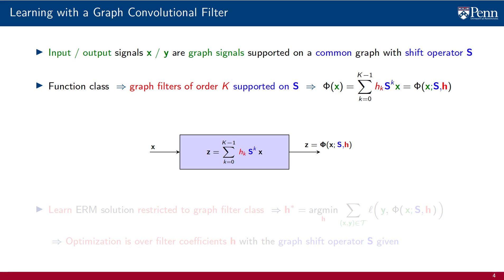To fix ideas, we describe this parameterization with a block diagram, which we show here. In this block diagram, the input is the graph signal x, which we feed into a graph convolutional filter of length K that produces the output z equals phi of x. The output is parameterized by the shift operator S and the filter coefficients h.